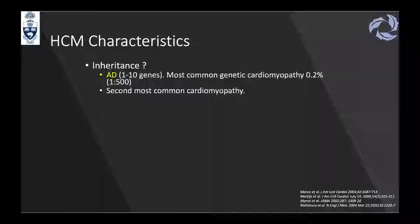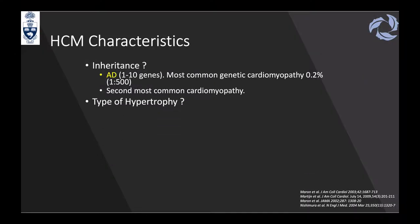The most typical inheritance is autosomic dominant. It is the most common genetic cardiomyopathy with a 0.2% prevalence, and it's the second most common cardiomyopathy after dilated cardiomyopathy.